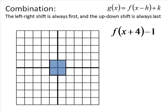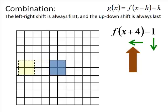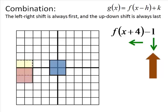Let's try one more with our square: f(x + 4) - 1. We always work from inside the parentheses outward. Inside the parentheses is a left-right shift — plus 4 means we go to the left. The minus 1 on the end is our up-down shift, and since it's minus, we go down. So take our square, go to the left 4, then go down 1. It's okay that they overlap — the pink one is our final transformation position.